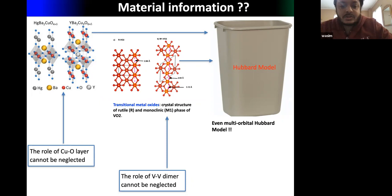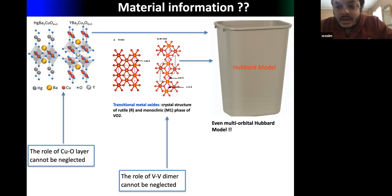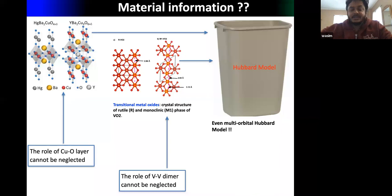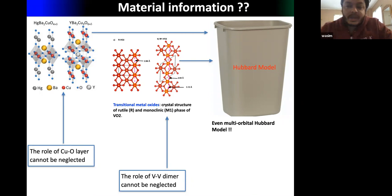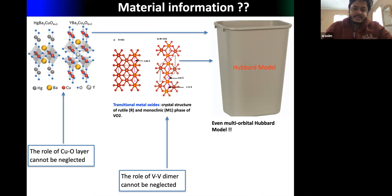For example, in high-temperature cuprates, the layered structure — whether cuprate or nickelate superconductors — has something to do with its physics. In transition metal oxides like VO₂, the vanadium atoms form dimers in the M1 phase, and this dimer plays a significant role in the physics of VO₂. So we cannot simply neglect material information.